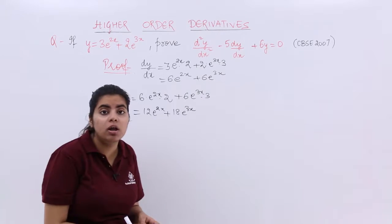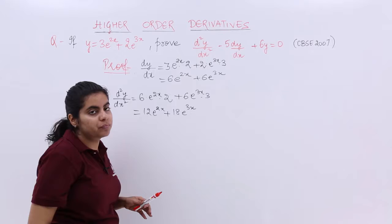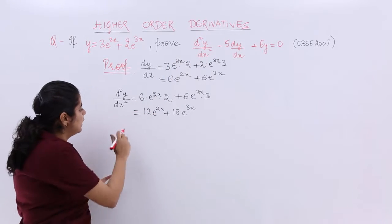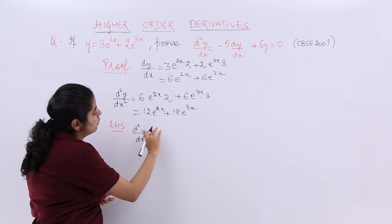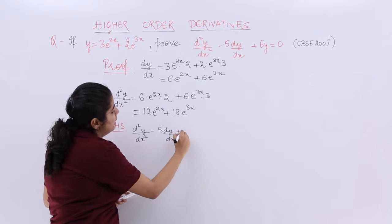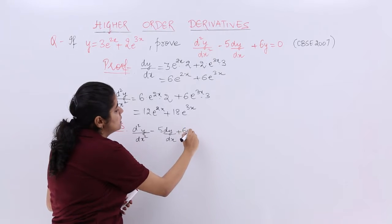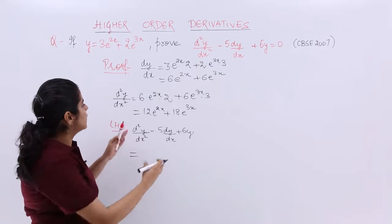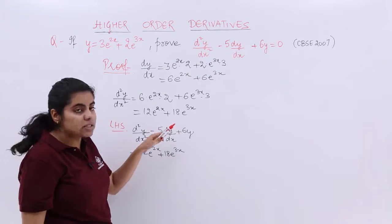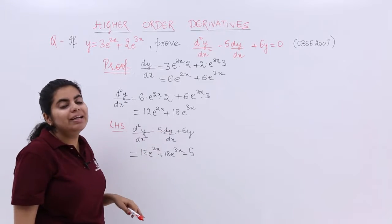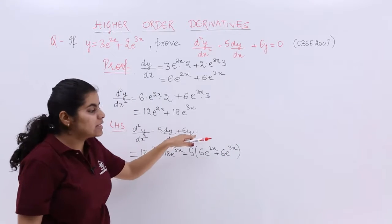Now can we leave our solution here? Not at all, because the question asks us to prove something, not just find the second-order derivative. So we have the LHS of the question. It says d²y/dx² minus 5(dy/dx) plus 6y. That is the LHS. We put in the values: d²y/dx² is 12e^(2x) plus 18e^(3x), minus 5 multiplied by dy/dx which is 6e^(2x) plus 6e^(3x).